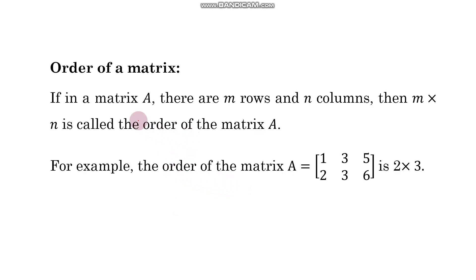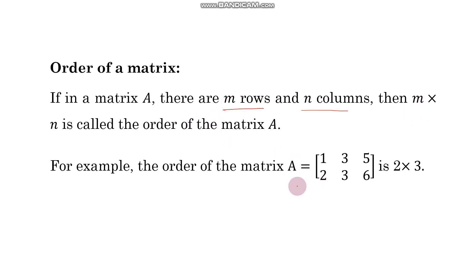Now, the order of a matrix. If in a matrix there are m rows and n columns, then we say the order of the matrix is m by n. Look at this matrix — here two rows and three columns are there, that's why the order is 2 by 3.